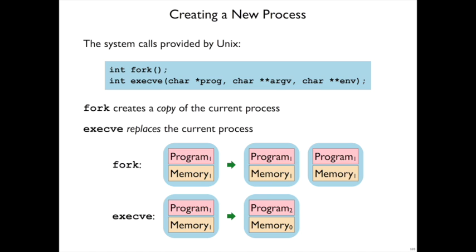What Unix provides instead is a pair of functions that we can use together to get the same effect. The first function is called fork, and it creates a copy of the current process. So if you have program one running with memory and some set of registers, then fork creates a copy of exactly the same thing, running the same program with the same code, the same picture of memory, and the same registers.